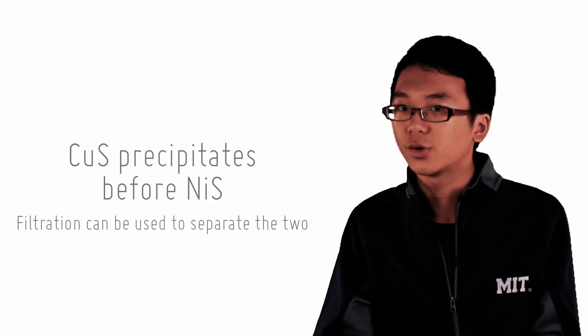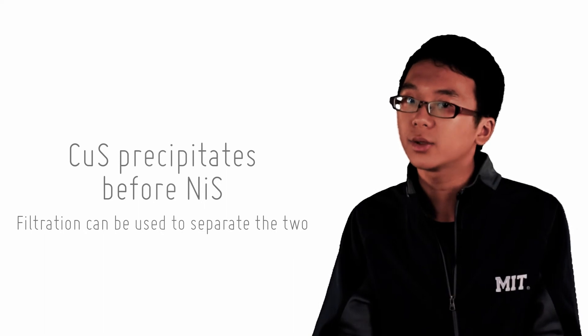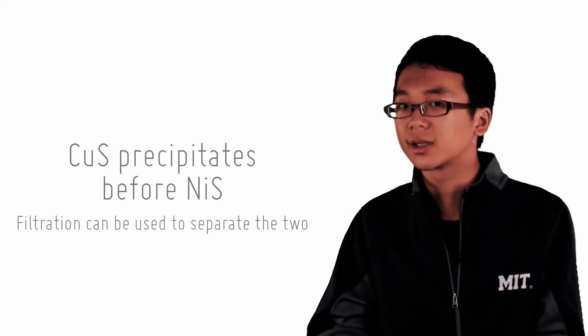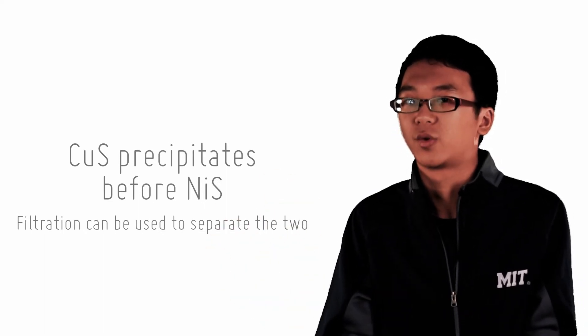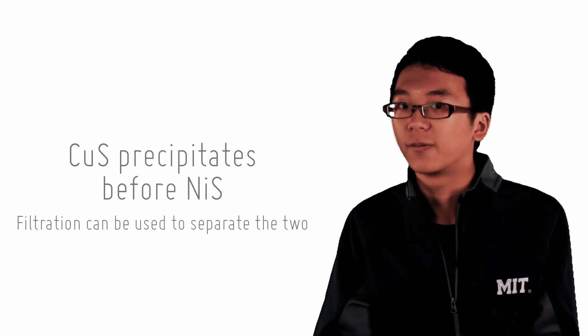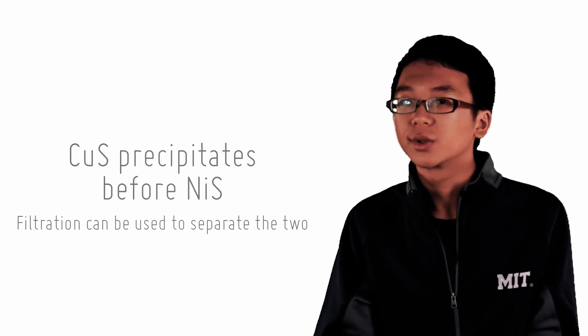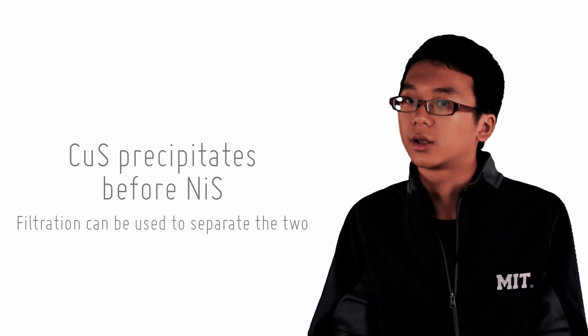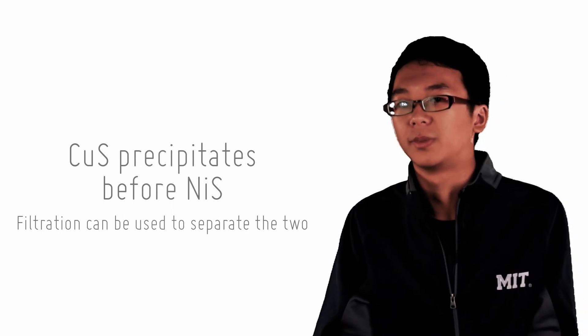Now since only CuS precipitates, we can make use of this phenomenon to perform selective filtration since CuS will now be the residue and NiS will still be dissolved and it will be in the filtrate. So, with that, this concludes the checkpoint on precipitation.